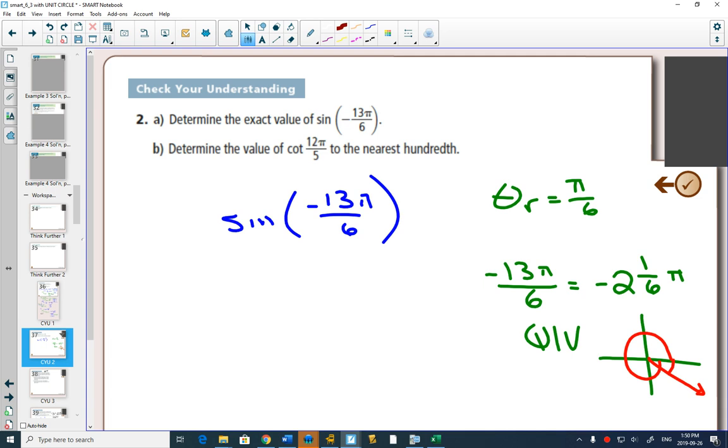So then sine of pi over 6 is 1 half. Because it's in quadrant 4, it's negative 1 half.